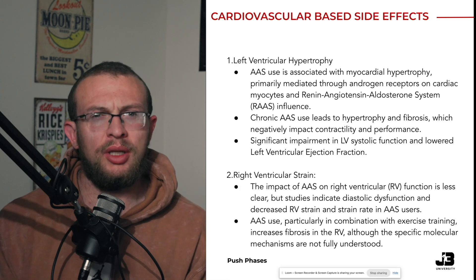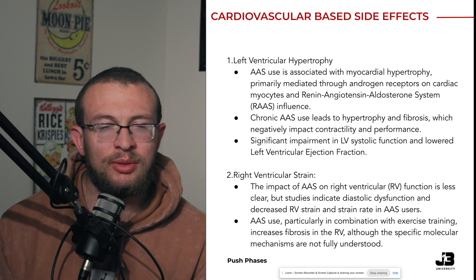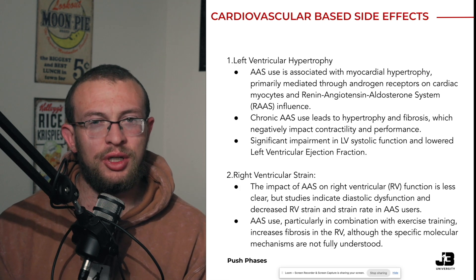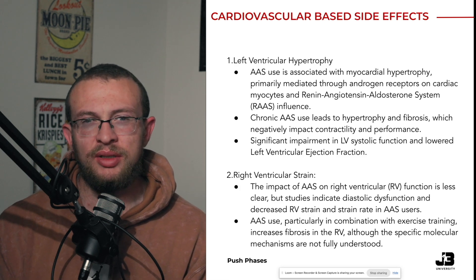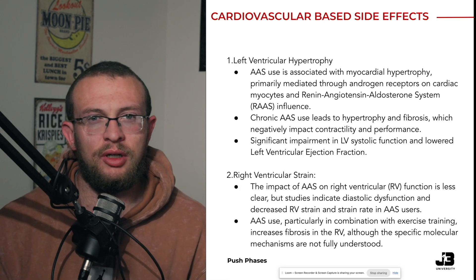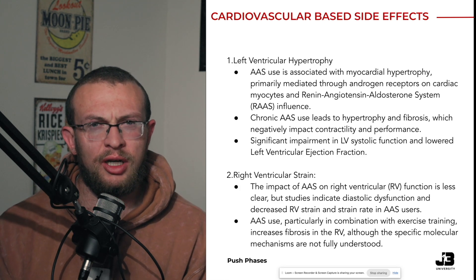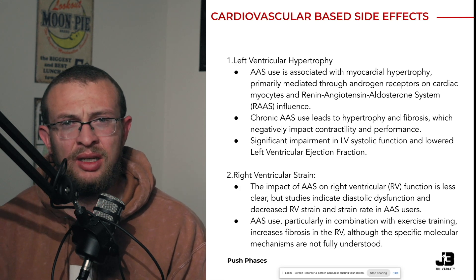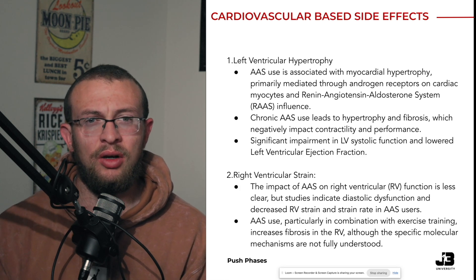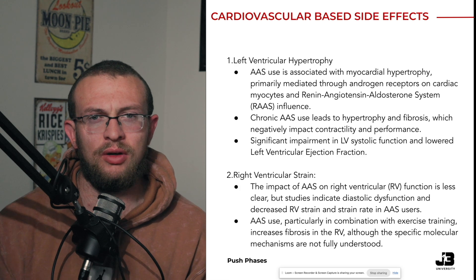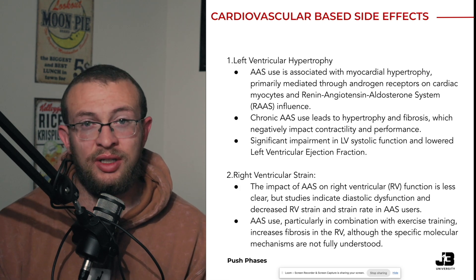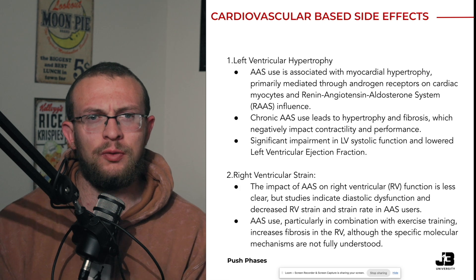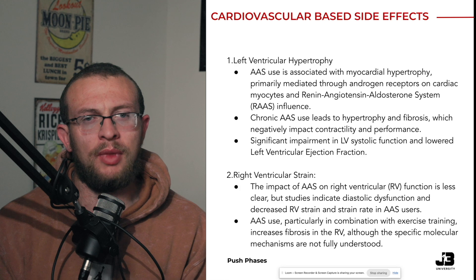When we start to look at cardiovascular-based side effects, the first one to consider is left ventricular hypertrophy — the structural changes that can happen to the left ventricle over a long period of PED use. AAS use is well associated with myocardial hypertrophy, driven by the renin-angiotensin-aldosterone system and androgen receptors on cardiac myocytes. Over time, chronic use can produce not only hypertrophy but fibrosis in cardiac tissues, ultimately affecting the heart's contractility and ejection fraction, which can be detected on an echocardiogram.